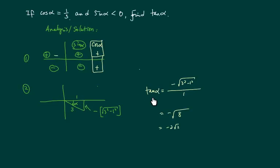So tangent alpha, using the definition, is opposite over adjacent. Evaluating it, tangent alpha equals minus two times square root of two.